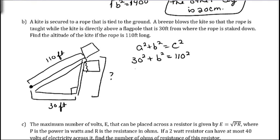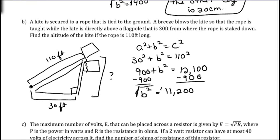So, 30 squared is 900 plus b squared. And 110 squared is 12,100. And we want to subtract 900 from both sides. And we get b squared is equal to 11,200. And then you want to take the square root on both sides.